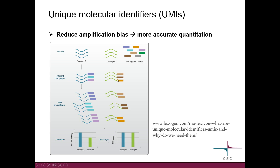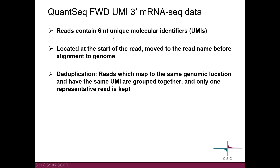This kind of problem can be solved with UMIs. In the first strand cDNA synthesis, we use UMI-tagged reverse transcription primers. After alignment, we can select reads that map to the same position and look at the UMIs. Reads with the same UMI are counted only once, and hence we know that the expression levels of the two transcripts are the same. UMIs are six-nucleotide sequences located at the start of the read. We extract them and move them to the read name before alignment to the genome so that they are stored. After alignment, we take reads which map to the same genomic location, have the same UMI, group them together, and keep only one representative.